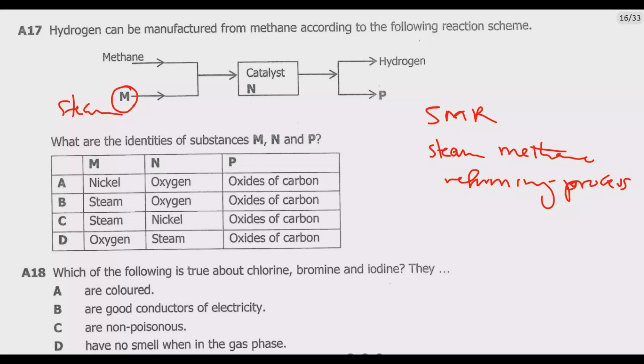If you go to the options, you notice that whenever there is nickel out, whenever there is oxygen out, so remain with B and C. A and D are out.